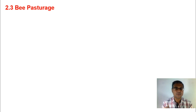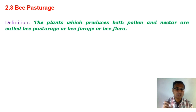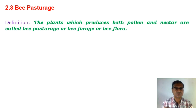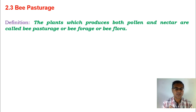The remaining two components are pollen grains and nectar, which are also collected from flowering plants. When bees collect the pollen grains as well as the nectar from different flowers, that is basically what we call the bee pasture. As per the definition, the plants which produce both pollen and nectar are called the bee pasture, or bee forage, or the bee flora.